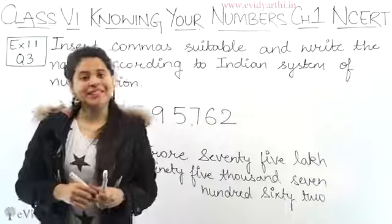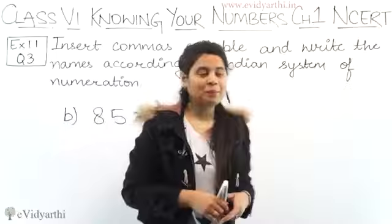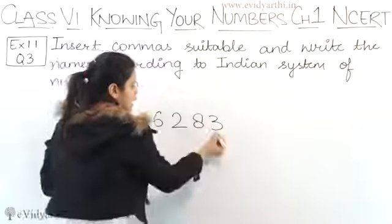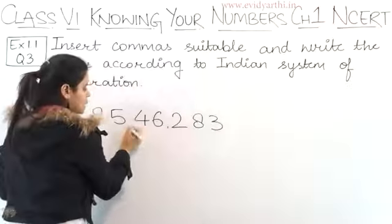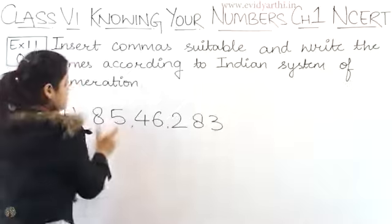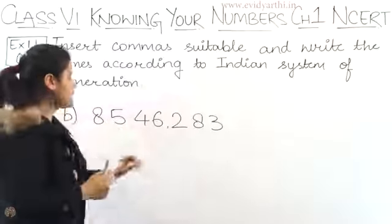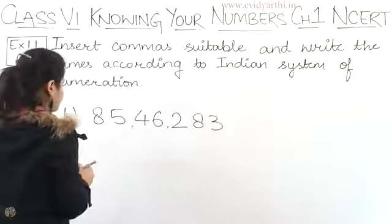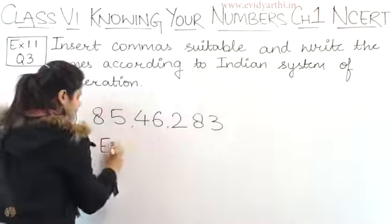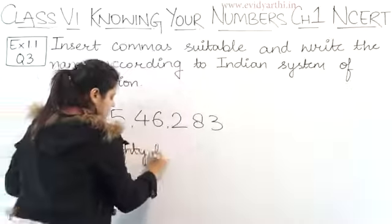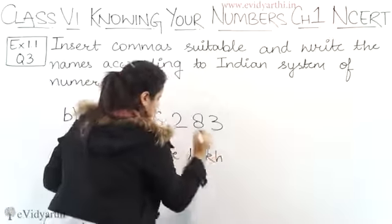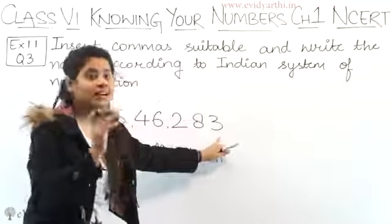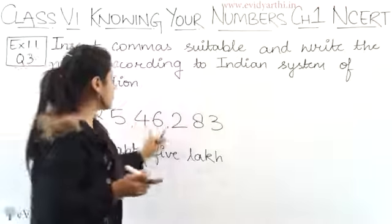This was Part A. Now let's come to Part B. The first number is 8546283. First let's put the commas - three numbers, then two numbers. So the first number is 85. How many digits are after 85? One, two, three, four, five - five zeros, which comes in lakh. So this becomes 85 lakh.